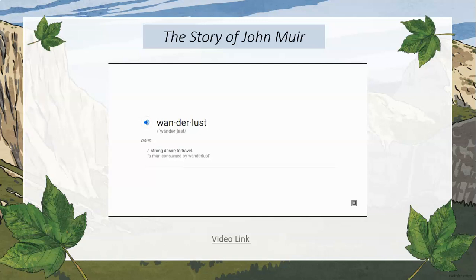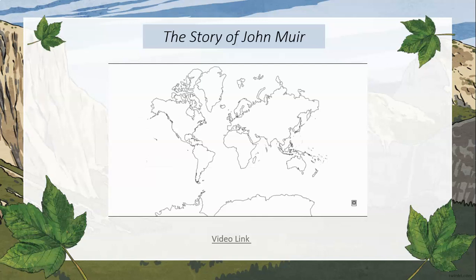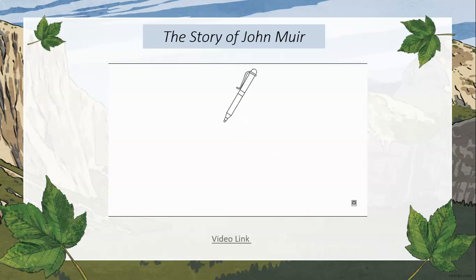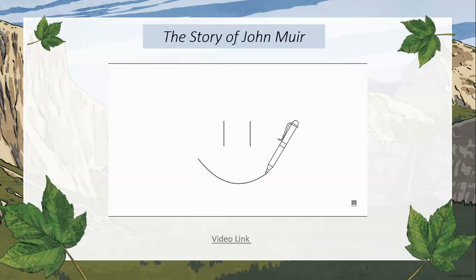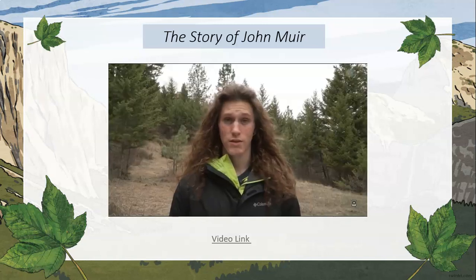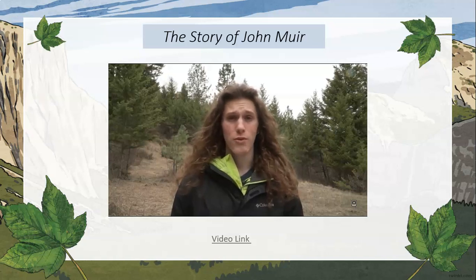Since that was not enough to feed his lust for adventure, he continued to travel to Alaska — a place he loved. He also went to Australia, South America, Africa, Europe, China, Japan, and many times to the Sierra Nevada. Muir became a serious writer, publishing 300 articles and 10 books, all of which recounted his travels, talked about his philosophy on the natural world, and encouraged everyone to go to the mountains.